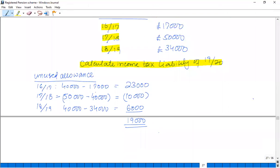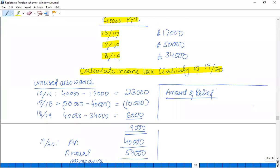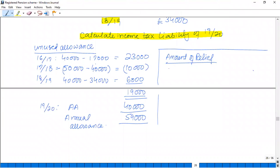We now have the current year AA of £40,000, giving us a total annual allowance of £59,000. The annual allowance is £59,000 and the contribution is the amount to check. Using the higher-of and lower-of method: earnings are £100,000 and contribution is £86,000, so the higher-of is £100,000 and the lower-of is £86,000, which equals the contribution. The 20% is paid by the tax authority.